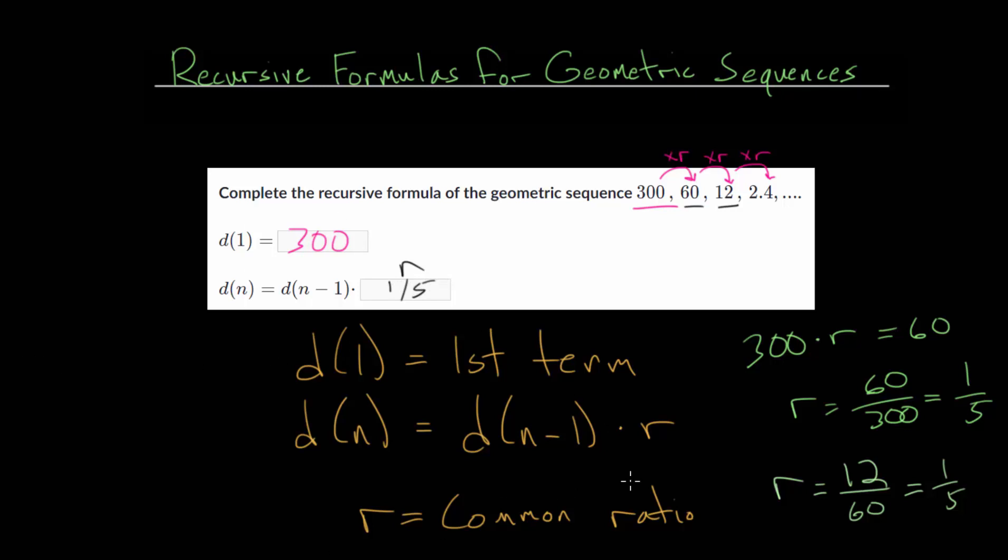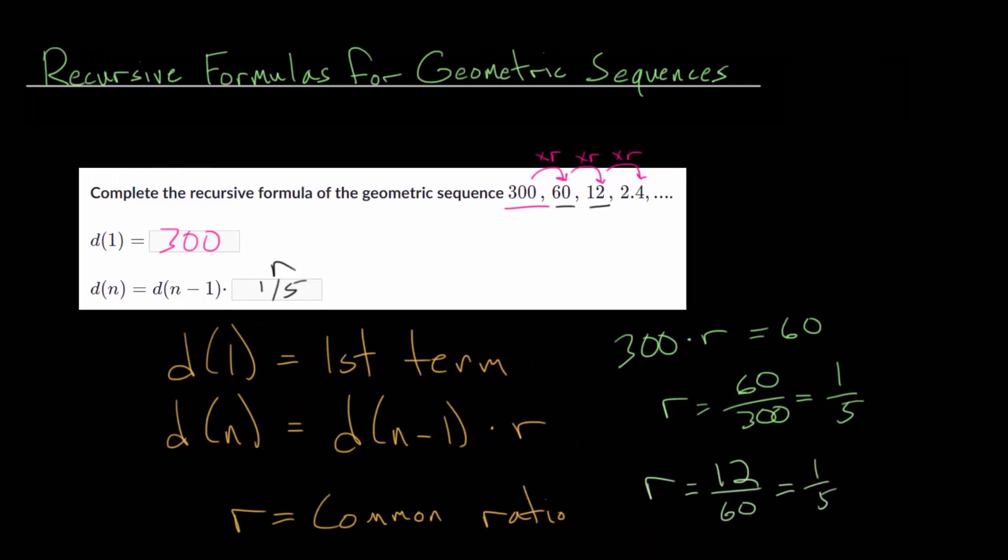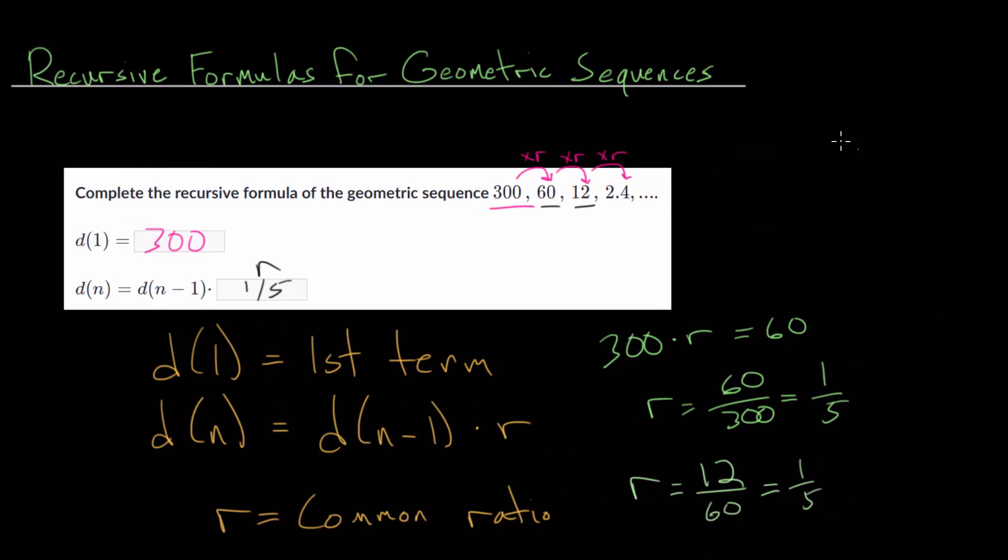Now we could also check these just to make sure that we're doing these correctly. So to check it, we just want to make sure our formula works. And let's find the second and maybe even the third terms. So d(2) would be an n value of 2. So we get 2 minus 1, which is 1. So it's the first term multiplied by one-fifth. And the first term is 300. And 300 multiplied by a fifth is 60. So that made sense. But let's do it again, just to get some extra practice.